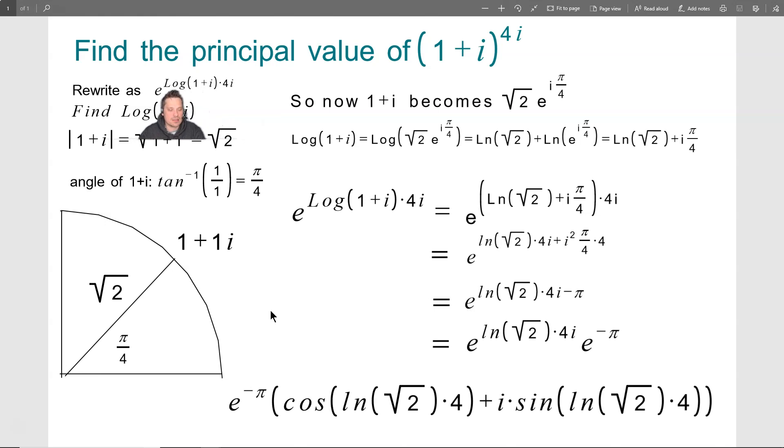So first I'm going to rewrite this as e to the log with the capital L because we're finding the principal value 1 plus i times 4 times i. The reason is that the e and this log functions are basically inverses, you could cancel them off and get back down to 1 plus i as the base. So what we need to do now is find log of 1 plus i.